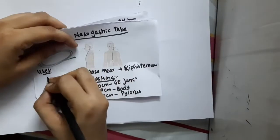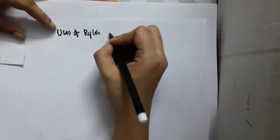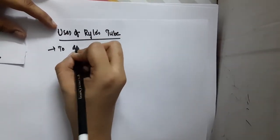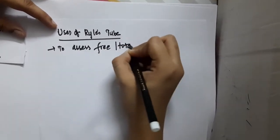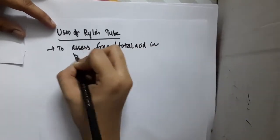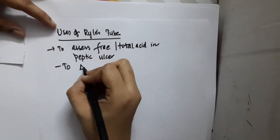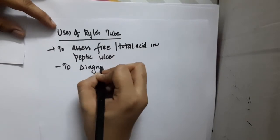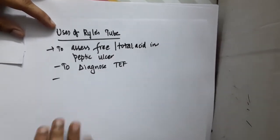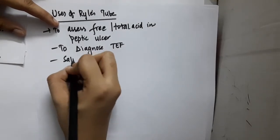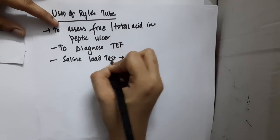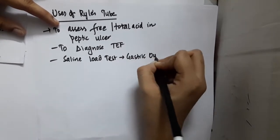Let me write the uses. Uses of Ryle's tube: It is used to assess free or total acid in peptic ulcer patients. It is used to diagnose tracheoesophageal fistula. It is used in saline load test, which is done for gastric outlet obstruction.